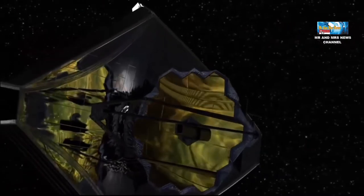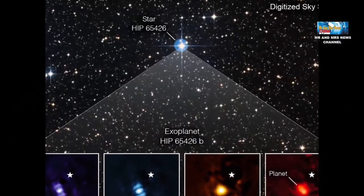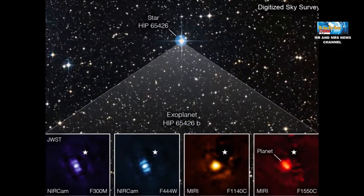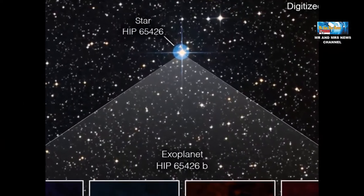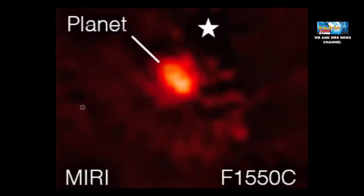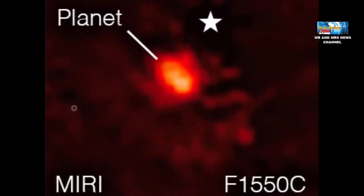Teleskop James Webb telah merilis gambar planet ekstrasuryanya, yaitu HIP 65426B, menggunakan panjang gelombang inframerah yang lebih panjang untuk mengungkapkan detail baru yang tidak dapat dideteksi oleh teleskop berbasis darat. Para astronom telah menangkap gambar langsung pertama dari sebuah planet ekstrasurya dengan teleskop luar angkasa James Webb.